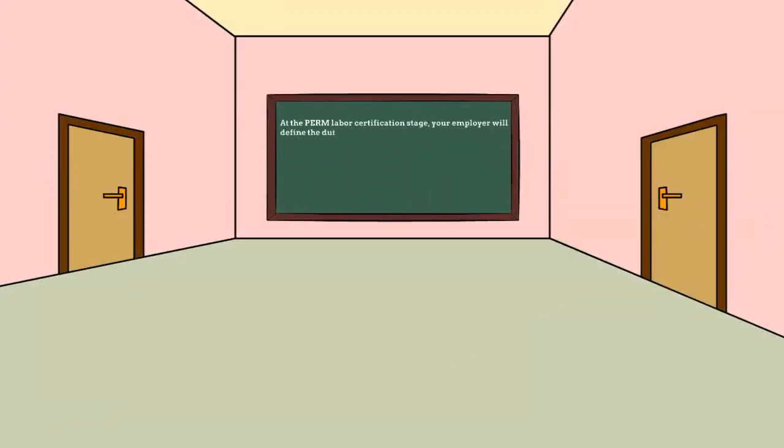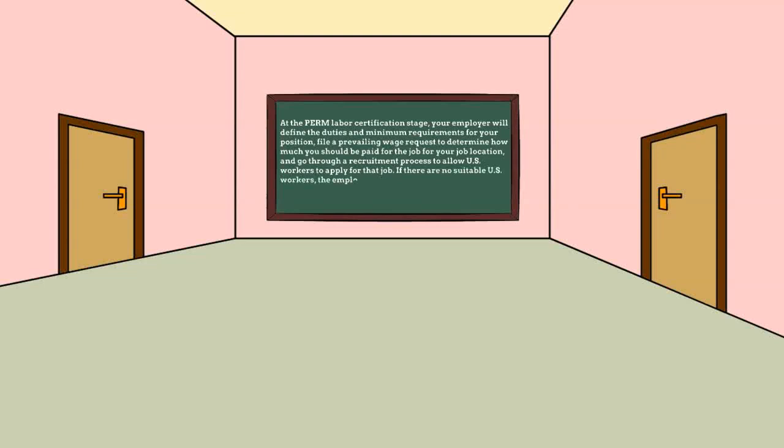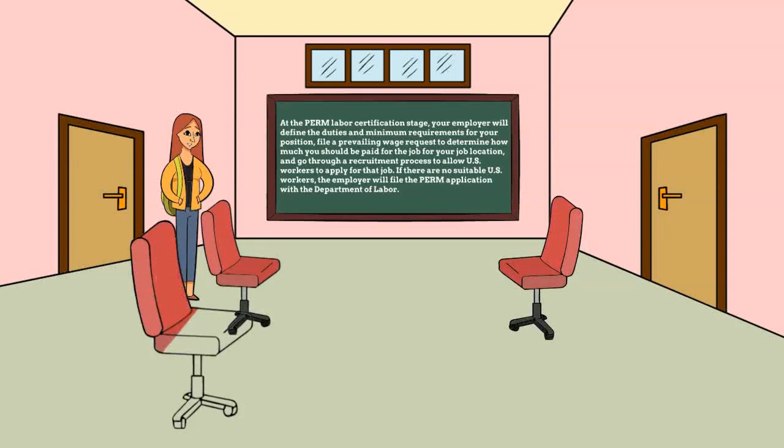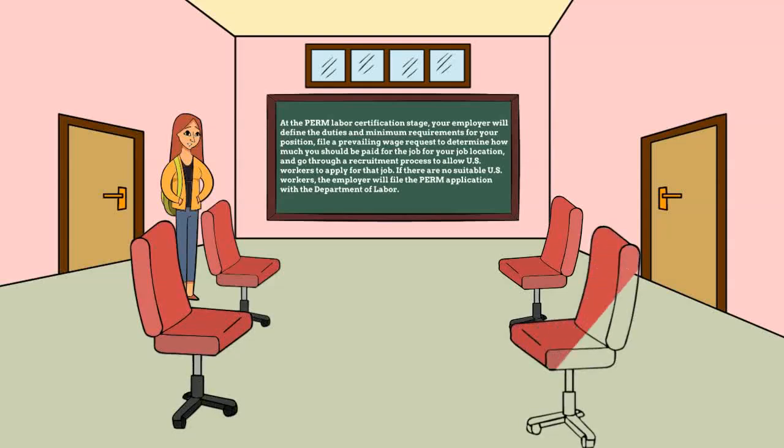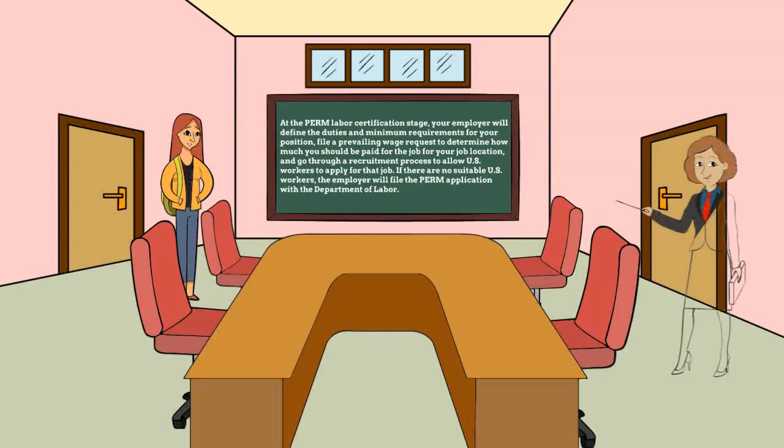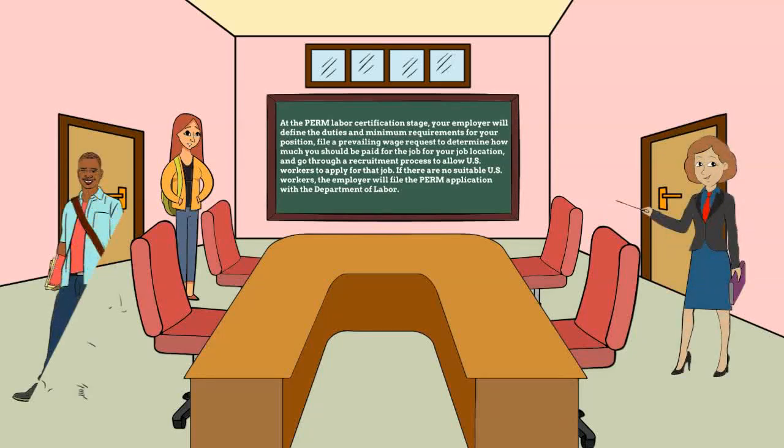At the PERM labor certification stage, your employer will define the duties and minimum requirements for your position, file a prevailing wage request to determine how much you should be paid for the job based on your job location, and go through a recruitment process to allow United States workers to apply for that job. If there are no suitable United States workers, the employer will file the PERM application with the Department of Labor.